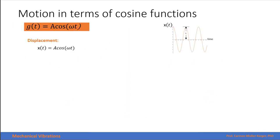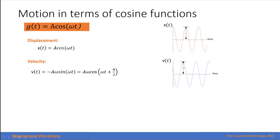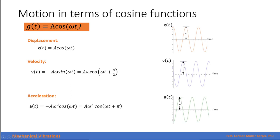If the response of our system is expressed in terms of cosine, that represents the displacement. The velocity is the derivative of the displacement, which can be represented as a sine or cosine function with amplitude equal to the original amplitude times the angular velocity omega. The acceleration is the derivative of the velocity, with amplitude equal to the initial amplitude times omega squared, and it has a phase angle of 180 degrees with respect to the displacement.